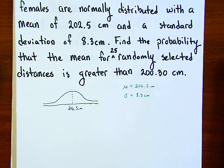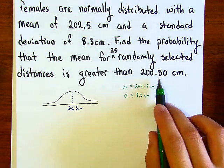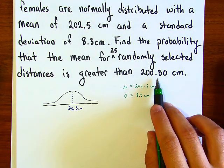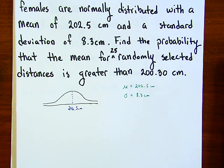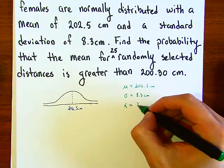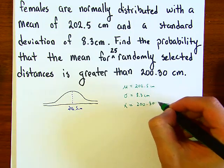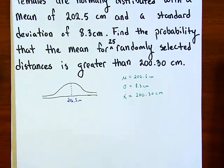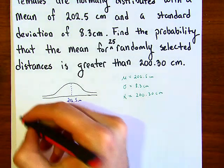So how do we solve this question? Our x value here is 200.30 centimeters. The first part we need to do is note that we need this formula to find the z value: x minus μ over σ over square root of n.